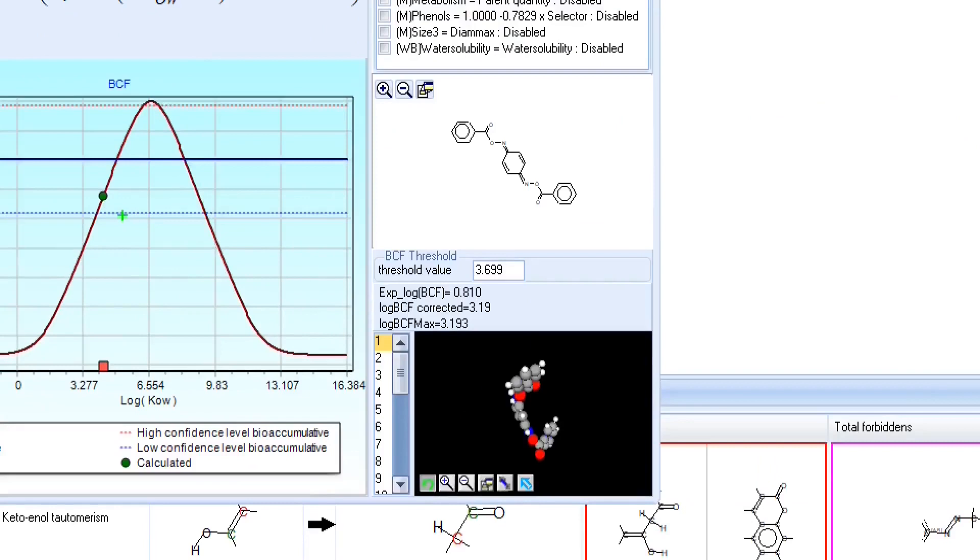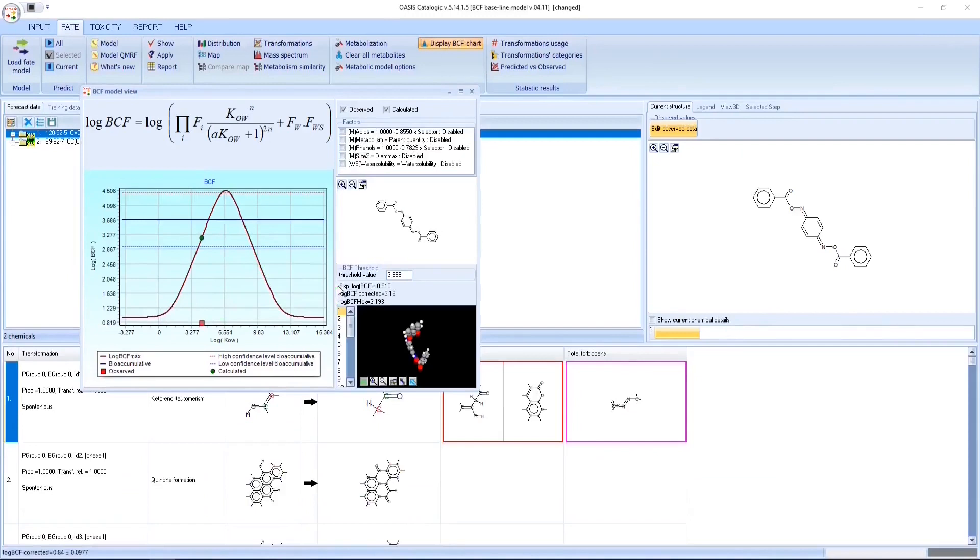In case of our target chemical, the BCF max indicates that the chemical is bioaccumulative. However, the target chemical is not bioaccumulative according to its observed BCF value.